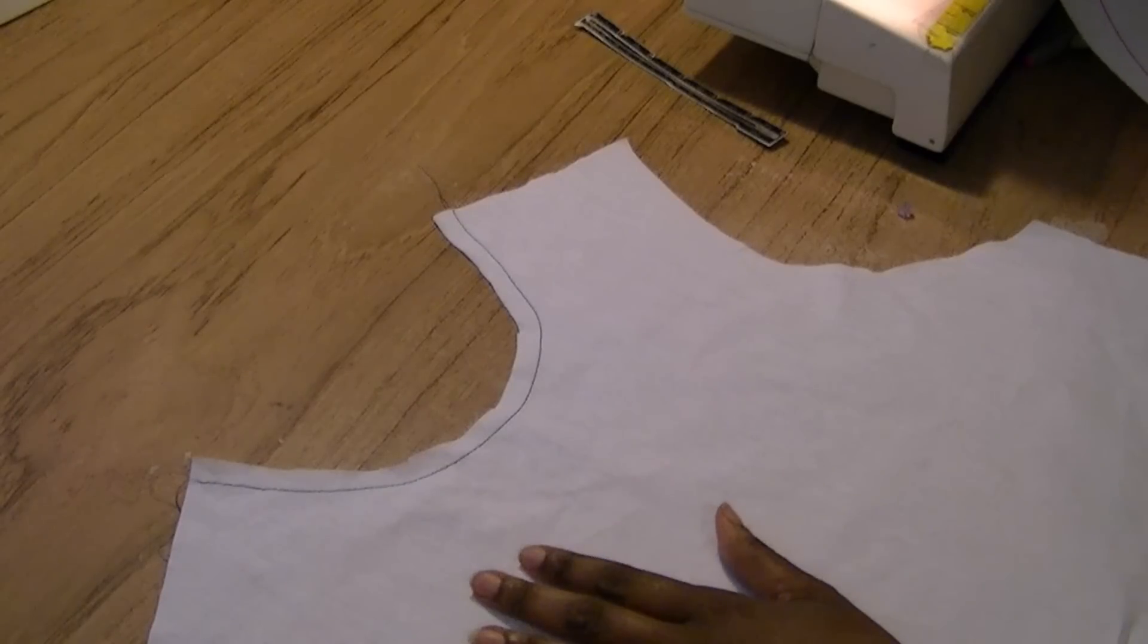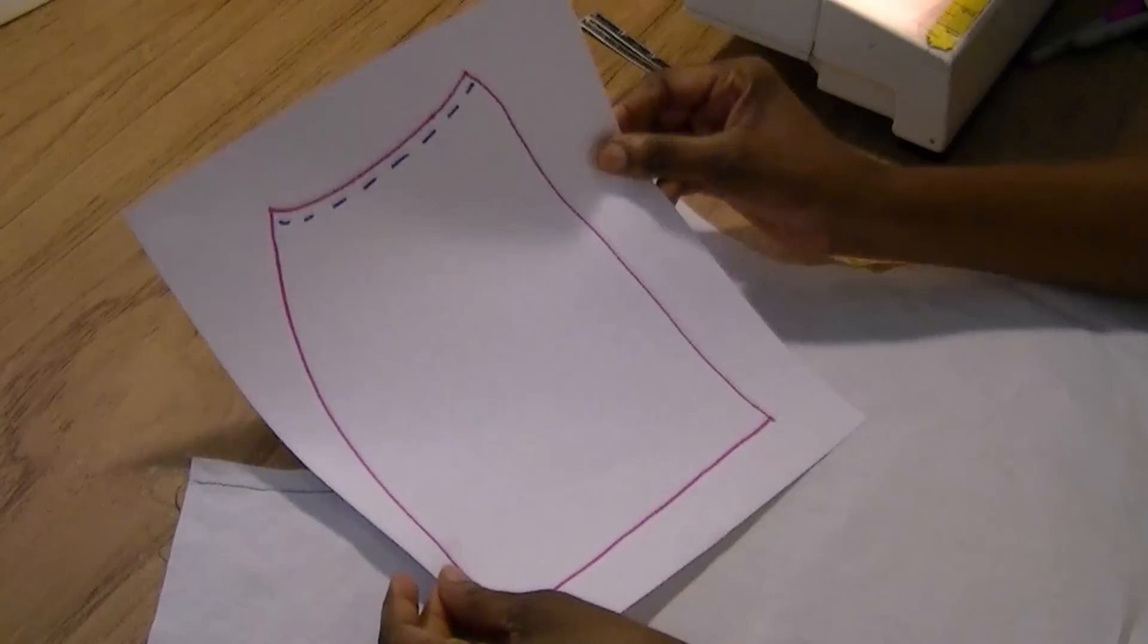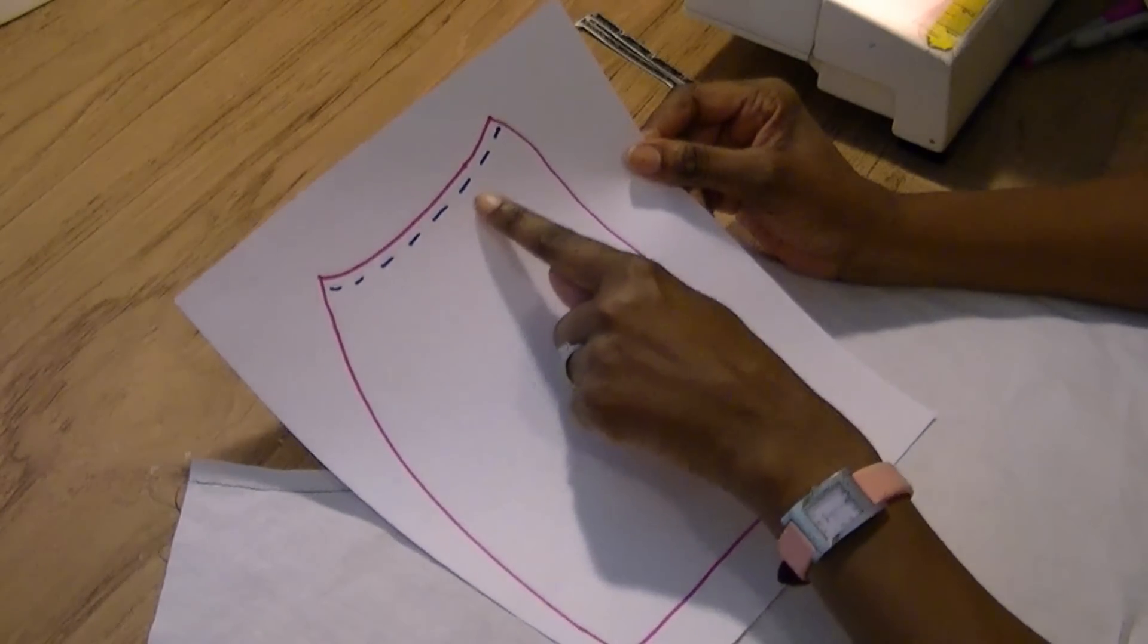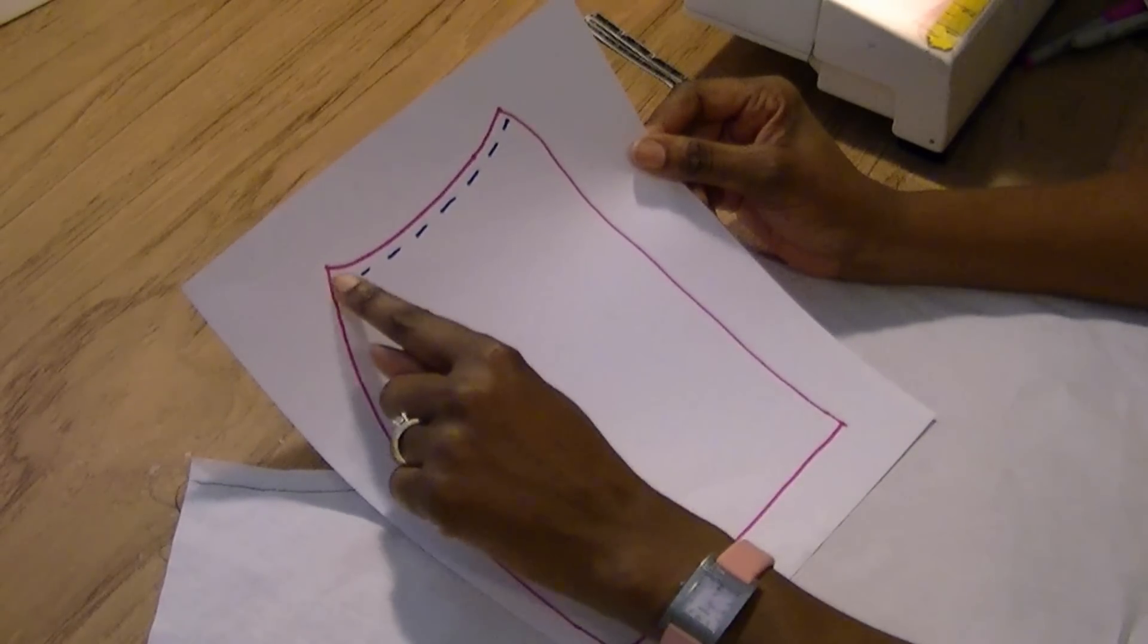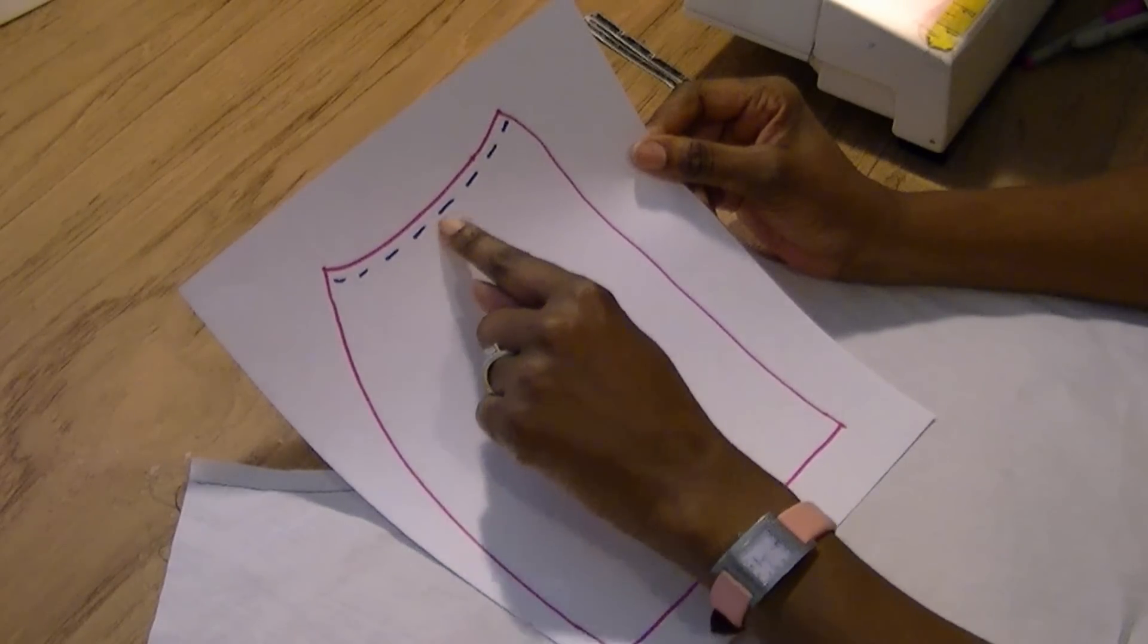Other areas you would do a stay stitch is if you were doing a skirt. The waistline area of the skirt that curves you don't want that to stretch out of shape. So the blue marker here represents the stay stitch.